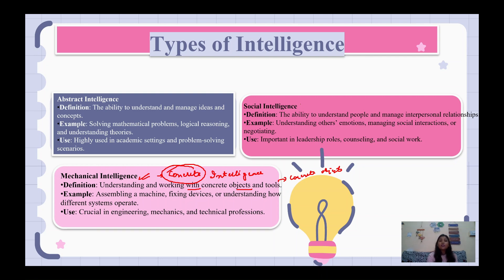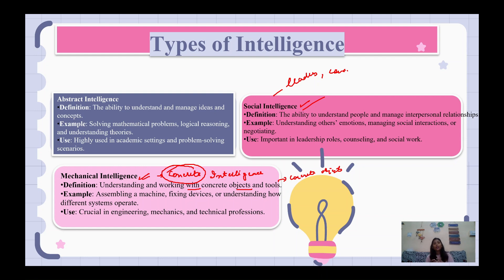Now we discuss social intelligence. Social intelligence means the ability to build inter-personal relationships with people, express their views, understand emotions, and manage social interactions. For example, leaders, counselors, and social workers tend to have higher social intelligence because they deal with people in a very effective way.